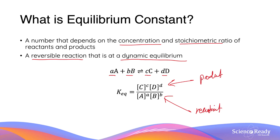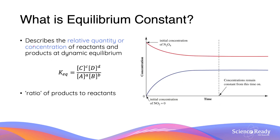The equilibrium constant as a number describes a relative quantity or concentration of reactants and products at dynamic equilibrium. For any equilibrium system, although the rate of the forward reaction must equal the rate of the reverse reaction, the concentrations of reactants and products may not necessarily be equal when the reaction reaches equilibrium.